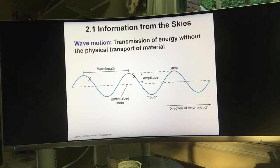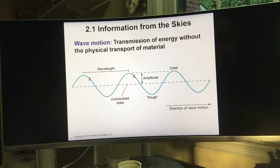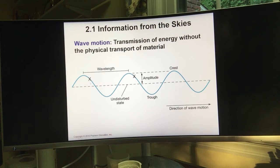Here is an example of a wave. Think about a water wave — if you go to the beach you'll see waves with ups and downs. When describing a wave moving in a given direction, the highest points are called crests and the lowest points are called troughs.